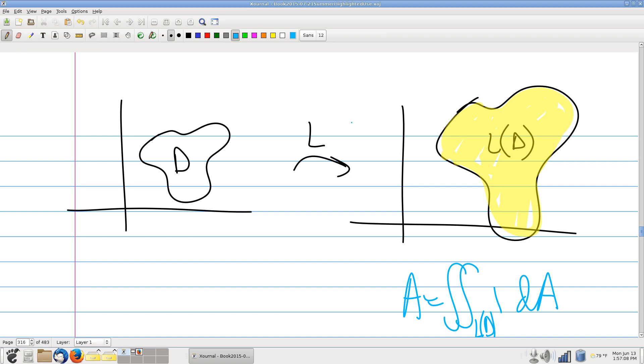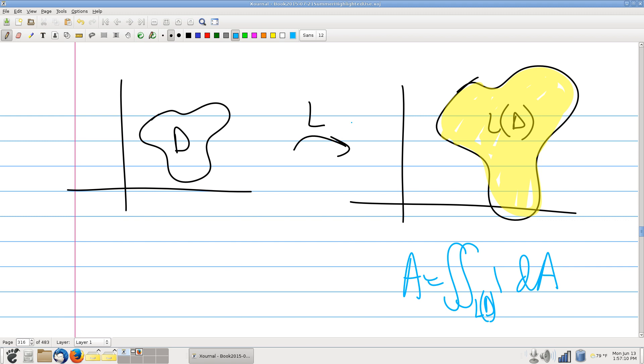All right, so let's, along those lines, then I'll rewrite this as equals, well, it's a double integral over the domain D. Double, now, our integrand was 1. The integrand is 1.